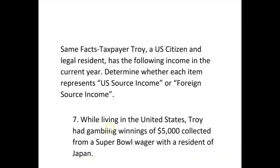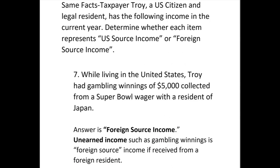Number seven: while living in the US, Troy had gambling winnings of $5,000 collected from a Super Bowl wager with a resident of Japan. The answer is foreign source income because gambling winnings are considered unearned income, and unearned income is foreign source if received from a foreign resident or foreign payer. Since the gambling winnings are coming from a Japanese resident, it's foreign source income.